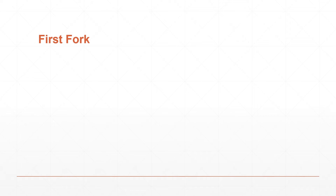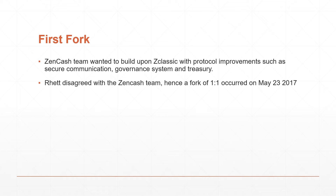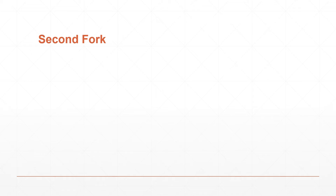The first fork of Zclassic was Zencast. Zencast's team wanted to build upon Zclassic and introduce new features such as secure communication, a governance system, and a treasury. Red disagreed with the Zencast team, and hence a fork of one-to-one — one Zencast token for one Zclassic — occurred on May 23, 2017. You can see the price actually went from $2 pre-announcement and pre-fork to a high of $10, and then to a low of $1 post-fork.